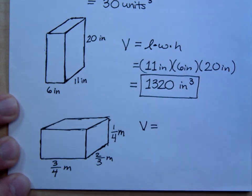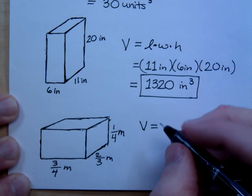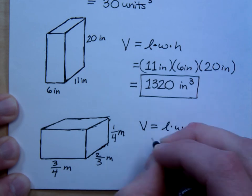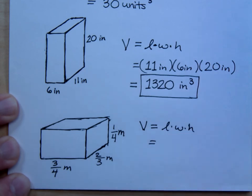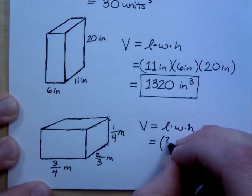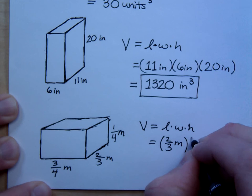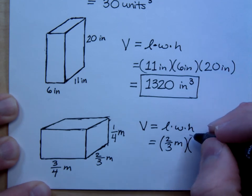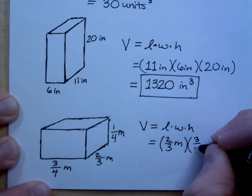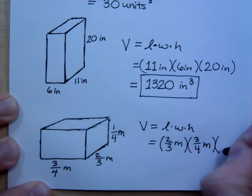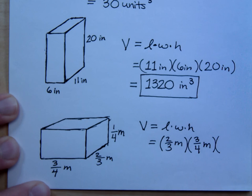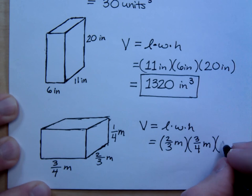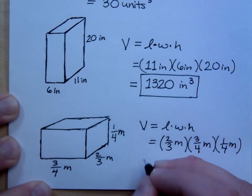Ain't we got a formula for the volume? Length times width times height. What's your length here? Your length, depending on how you look at this, is going to be two-thirds of a meter. What's your width? Fine, I'll just do this problem for you. It's three-quarters of a meter. And what's your height? That's right, it's one-fourth of a meter.